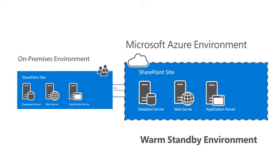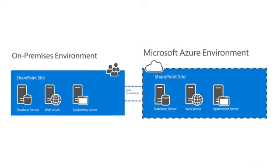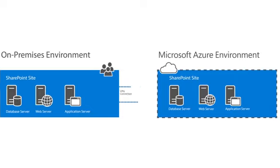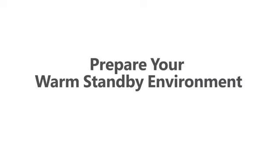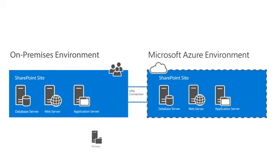You can quickly switch users to the warm standby with a few manual steps, which gives you time to troubleshoot the on-premises problem. You'll need to prepare your warm standby environment in advance to make sure it's ready when you need it. Add a file server on-premises and another in Azure.